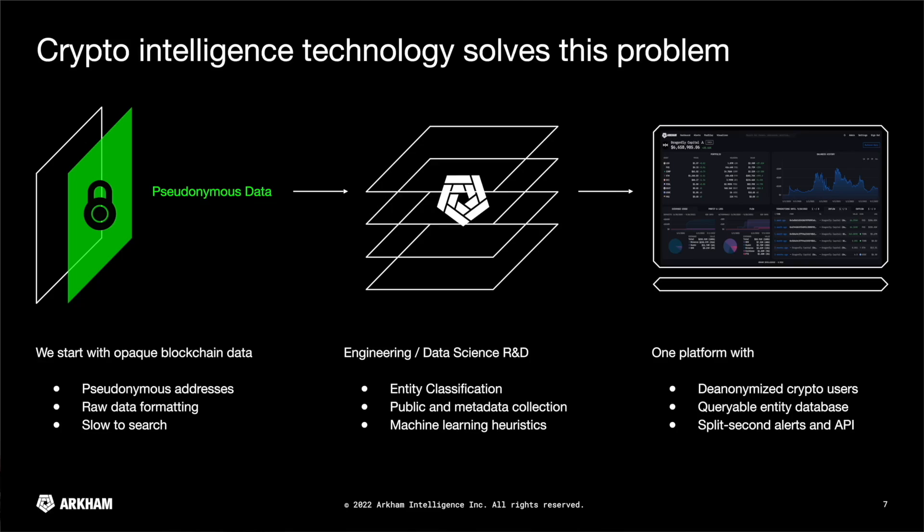Based on the information that these three addresses belong to one person and these five addresses belong to one institution, we use machine learning techniques to determine that a label is appropriate for a particular entity and identify which wallets are owned by which institution. The end result is one platform where you can see all of these de-anonymized users in a queryable entity database that has an API you can use directly.